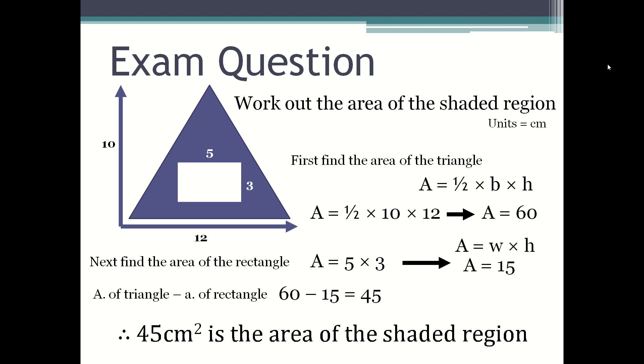or there's the shaded region where you have to find the area of the bigger shape and the smaller shape. Then you do the area of the big shape minus the area of the small shape in order to find the area of the shaded region.